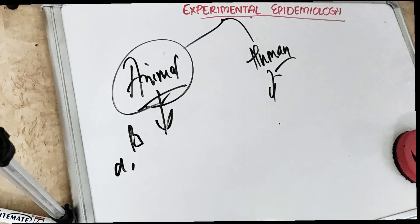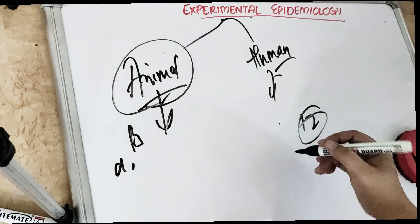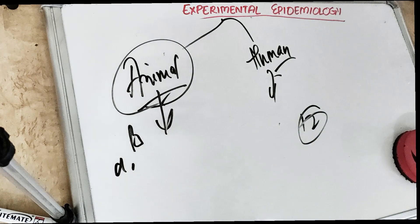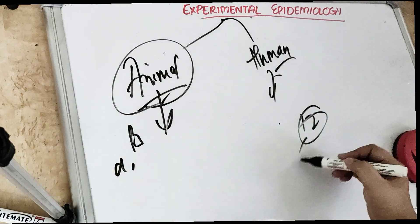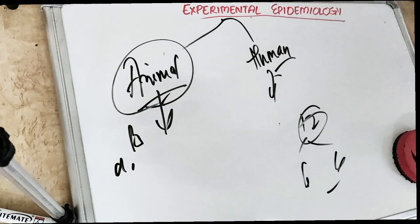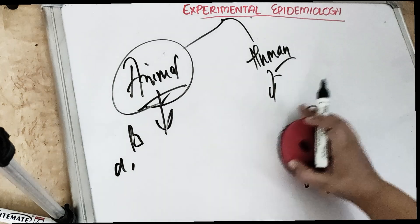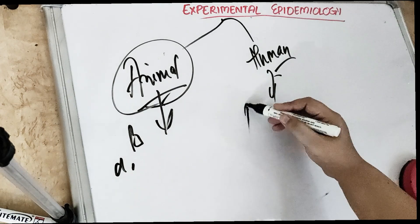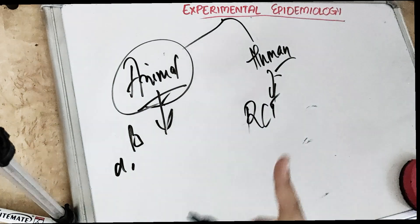Human trials were first conducted by James Lind, who performed an experiment on 12 soldiers suffering from scurvy. He divided them into 6 pairs and did the intervention. In human trials, we have two kinds: RCT — randomized controlled trial (not root canal treatment!) — and non-RCT.